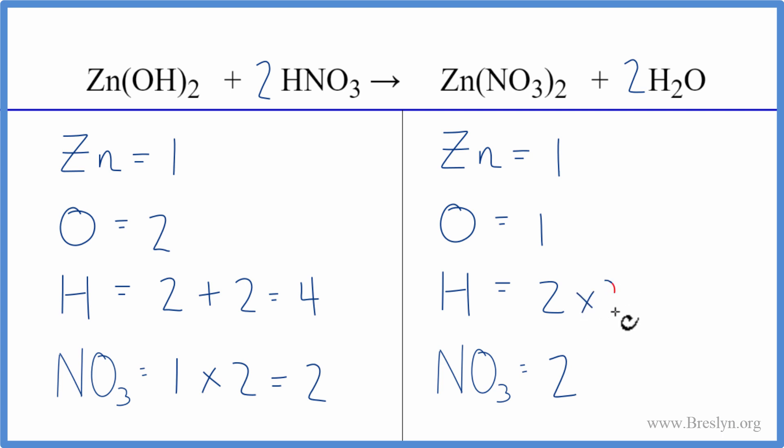Two times two. That gives us four hydrogens. Those are balanced. One times two for the oxygens. That gives us two. And we're done.